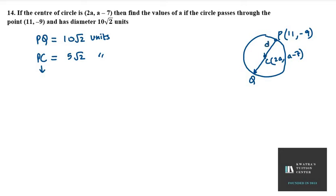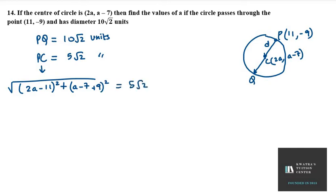We apply the distance formula between P and C. On the left-hand side, we get: √[(2a − 11)² + (a − 7 − (−9))²] = 5√2. Expanding (2a − 11)²: we get 4a² + 121 − 44a.